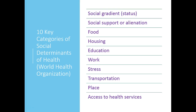Public health practitioners spend a lot of time observing where there are healthy populations and where there are populations that are lacking in health or have an increase in disease. Because of these observations, we have been able to categorize the social determinants. Provided here is a list of the ten key categories from the World Health Organization, sometimes known as the WHO. So let's review these.